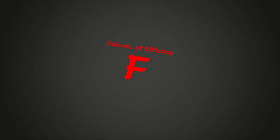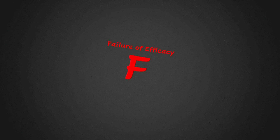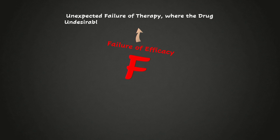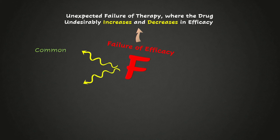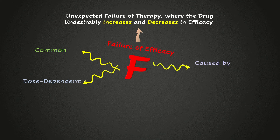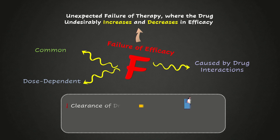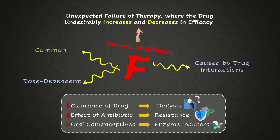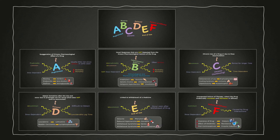Heading towards the last type — type F reactions. They are characterized by the unexpected failure of therapy, where a drug undesirably increases or decreases in efficacy. These reactions are common, dose related, and often caused by drug interactions. Type F reactions may include decreased clearance of a drug by dialysis, decreased effect of antibiotics due to resistance developed by certain bacteria, or failure of oral contraceptives in the presence of enzyme inducers. That was all about Rowland-Thompson's classification of ADRs. For more such videos stuffed with knowledge, keep watching scardia.com.